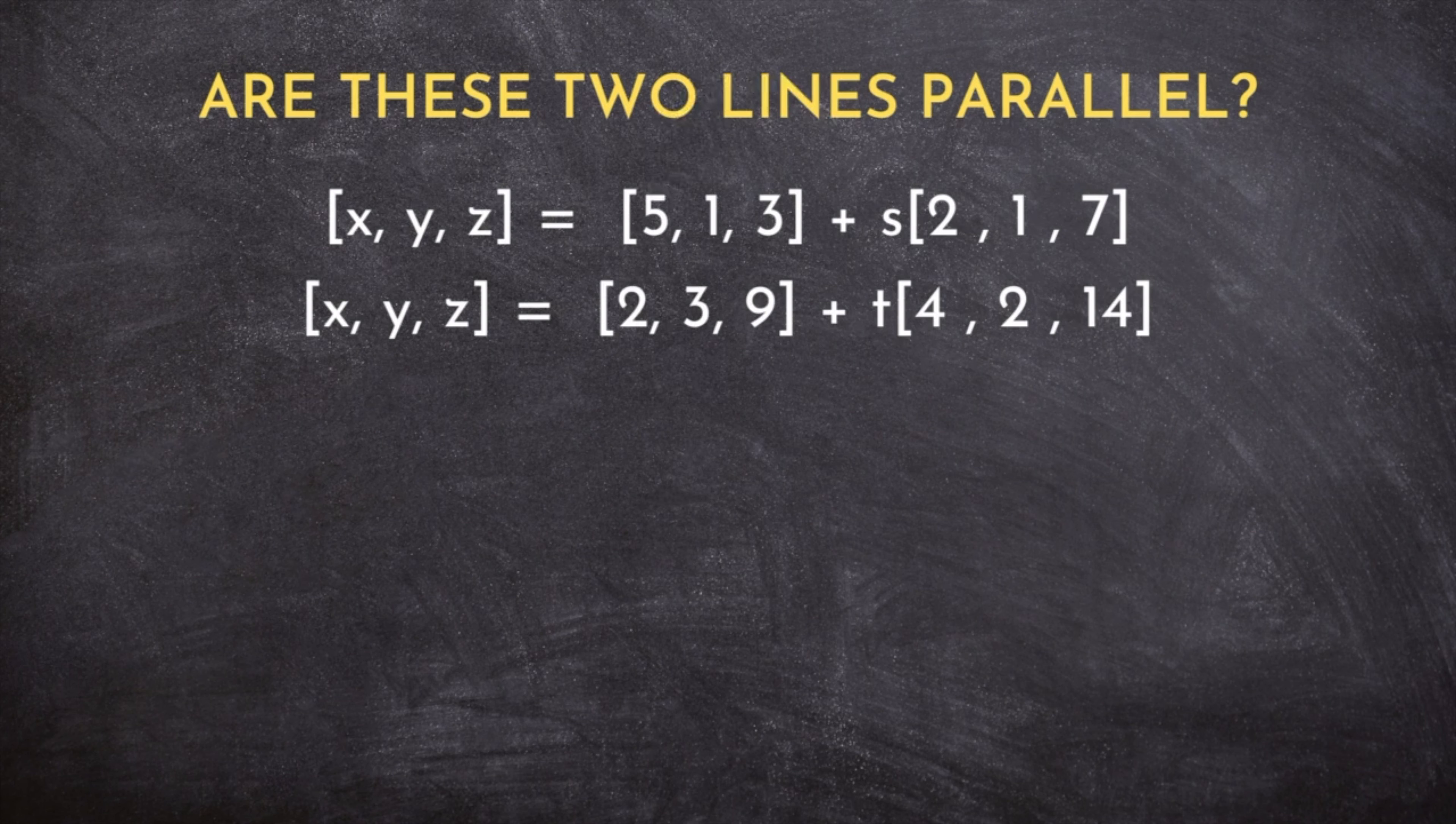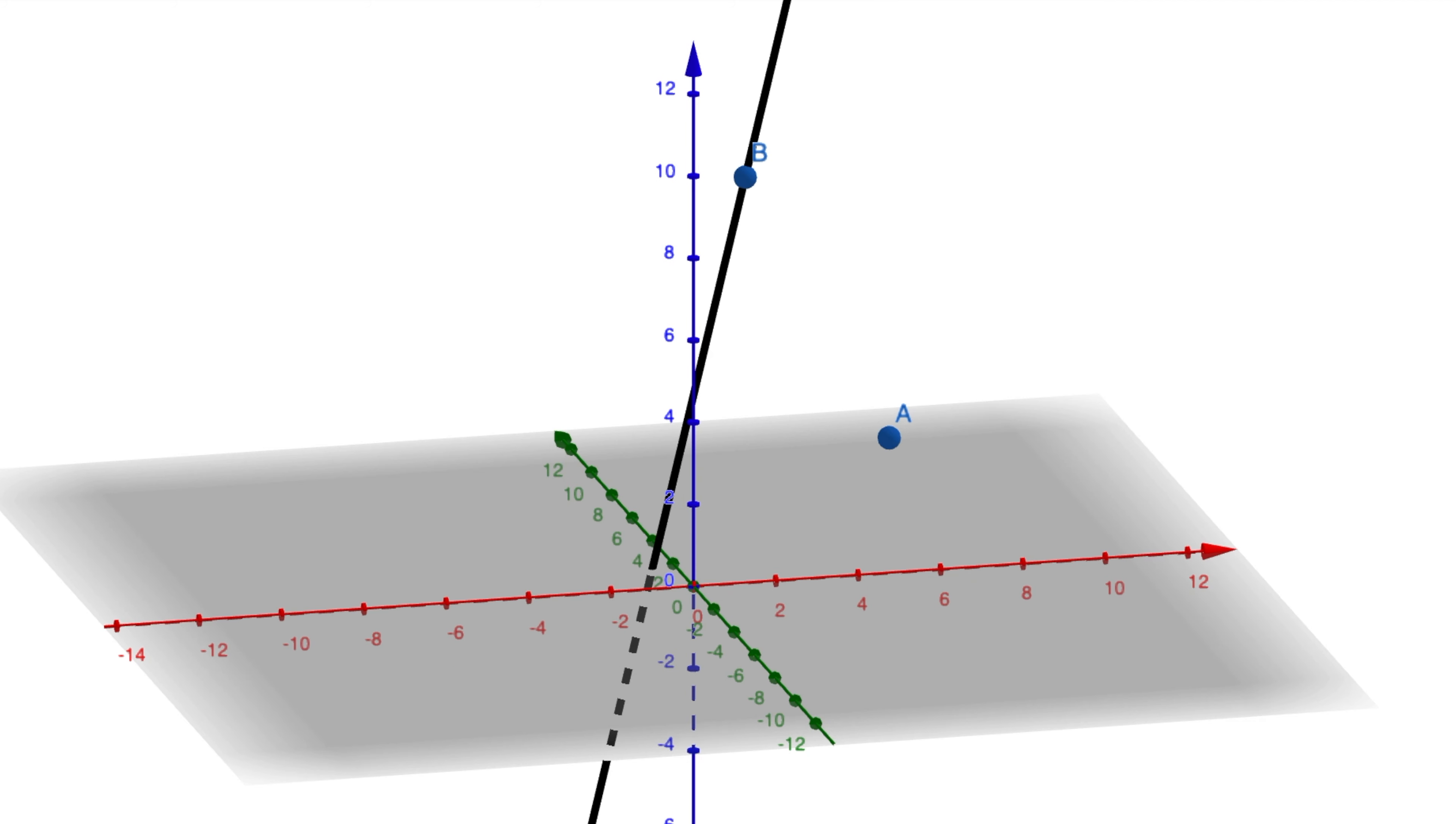Well, to figure this out, we need to take a look at this other part of the vector equation. This is the part of the equation that tells us a point that falls on each line. So the point (5,1,3) is on this line, and the point (2,3,9) is on this line. If we sub one of these points into the other equation, we should be able to see if that point falls on that line.